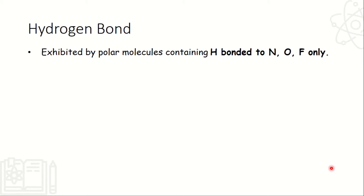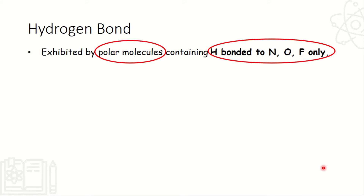And then hydrogen bond — exhibited by polar molecules containing hydrogen bonded to NOF (nitrogen, oxygen, or fluorine). Wag kayong malilito: pag yung hydrogen nag-bond sa nitrogen, sa oxygen, sa fluorine, at polar molecules siya, automatic hydrogen bonding yun. Kailangan i-check pa rin natin yung polarity ng molecules natin, and then check mo saan ba dumikit yung hydrogen — dumikit ba siya kay nitrogen, kay oxygen, at kay fluorine?